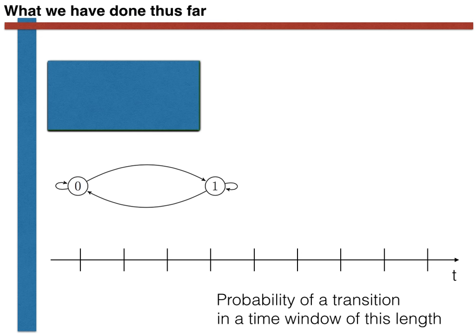In other words, we could divide our time axis into discrete chunks of length delta T, and the transition probability matrix would tell us about the probability of transition given that we wait for this particular length of time.